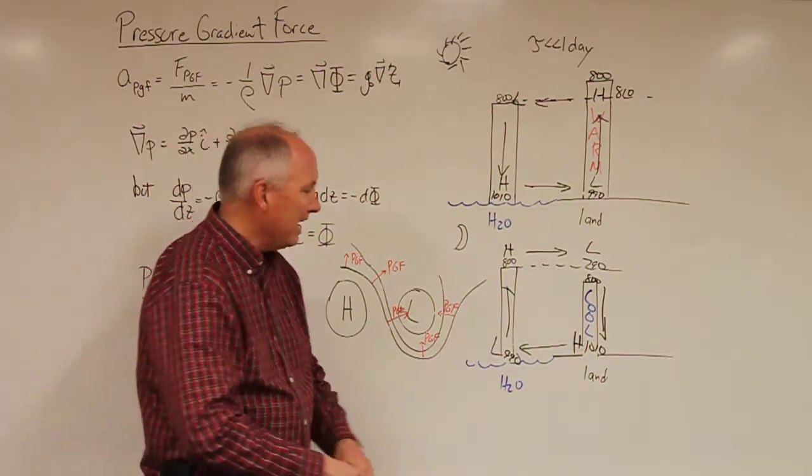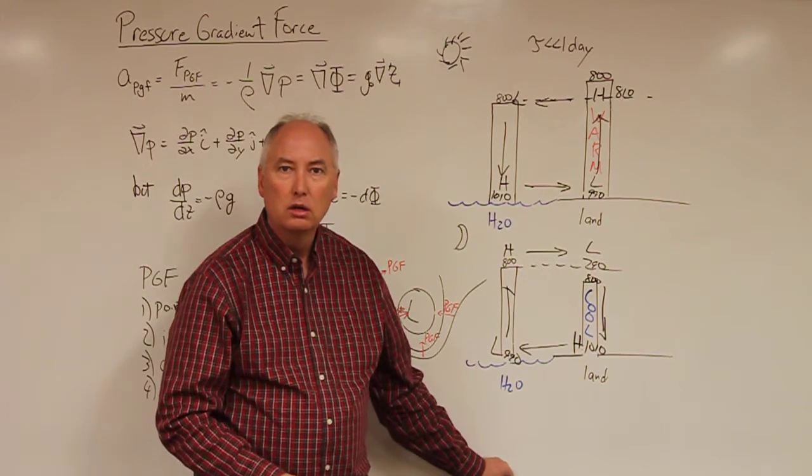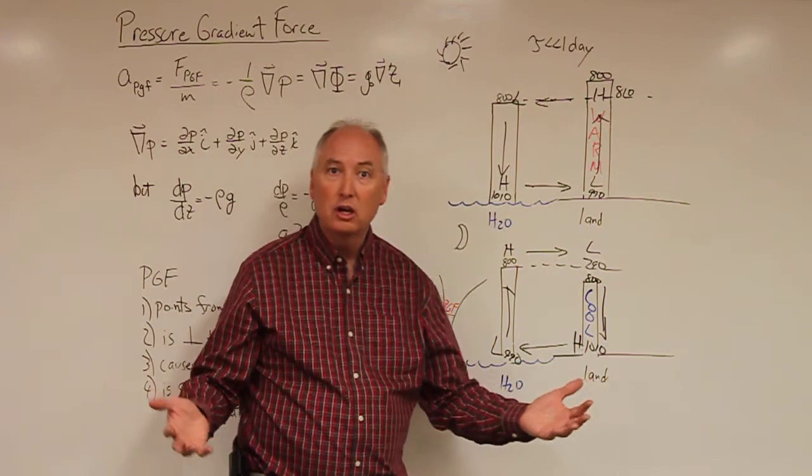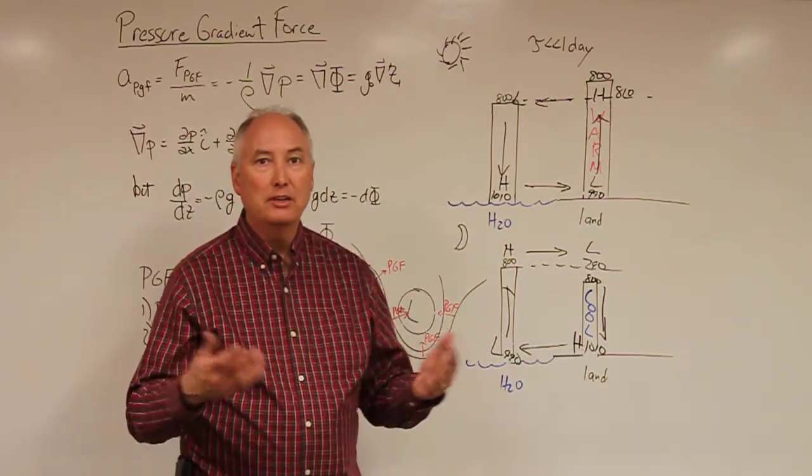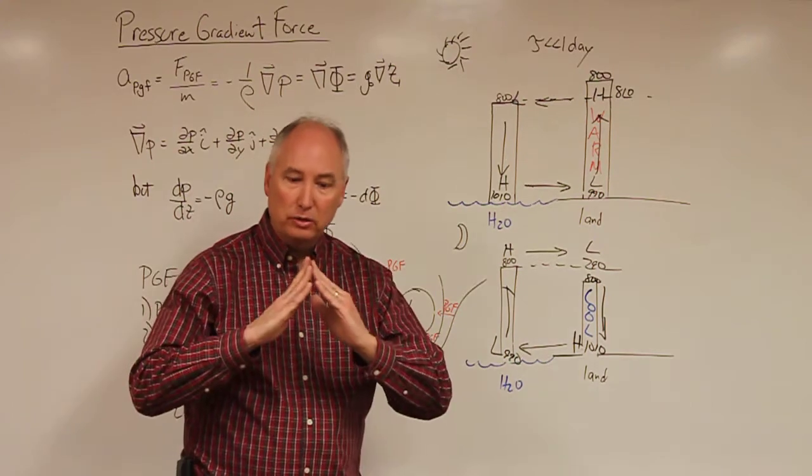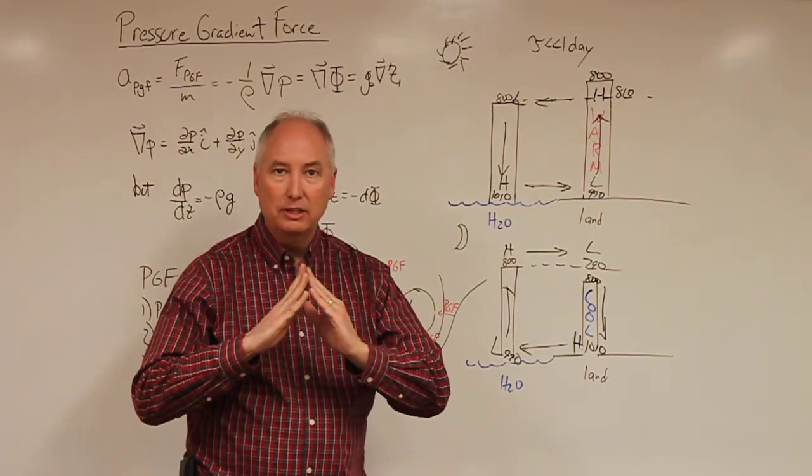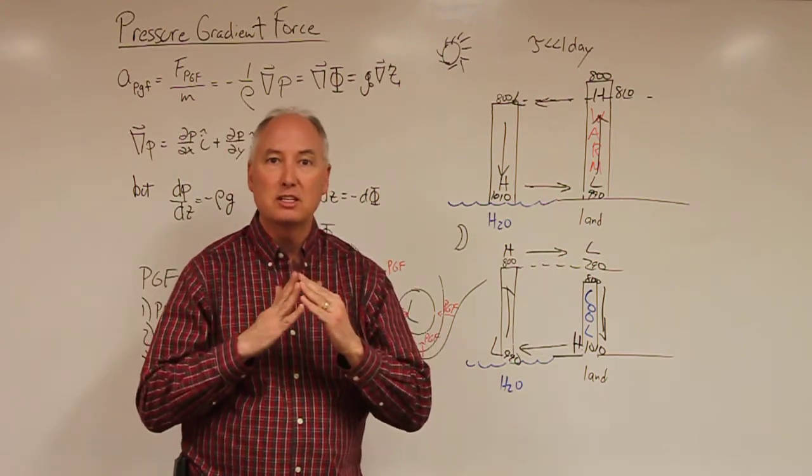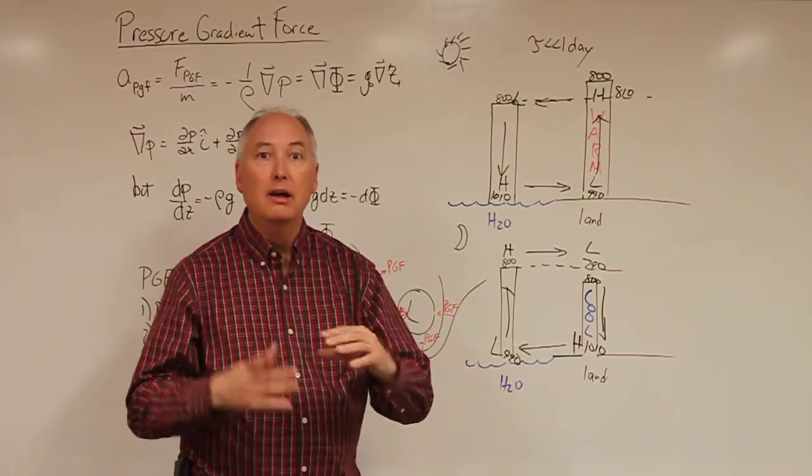So when somebody asks me, why does the wind blow? I would say, because we have an unequal heating distribution on our planet. And we can have an unequal heating distribution on different scales. So for example, you can have a mountain, and you can have differing irradiance on the north-facing slope versus the south-facing slope can give you differential heating and can impart motion.